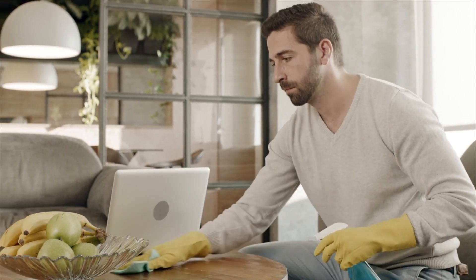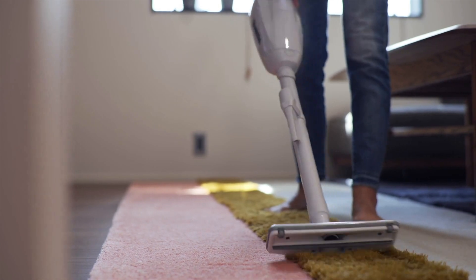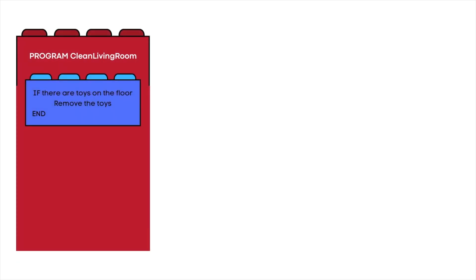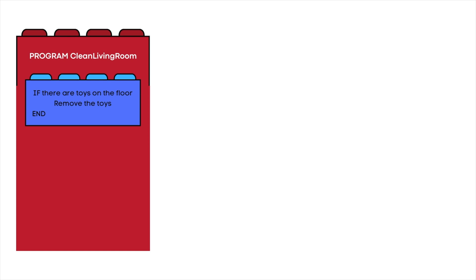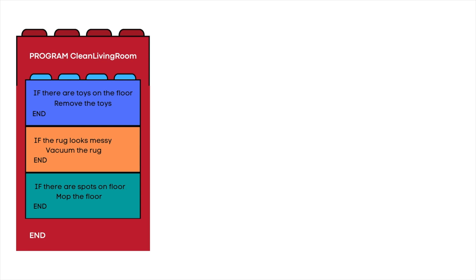Let's look at an example. Imagine you are tasked to clean the living room. A program for cleaning the living room would look something like this: Program 'Clean Living Room' — if there are toys on the floor, remove the toys; if the rug looks messy, vacuum the rug; if there are spots on the floor, wipe the floor with a wet mop. Each of these — remove the toys, vacuum the rug, and wipe the floor — are different functions of the program.